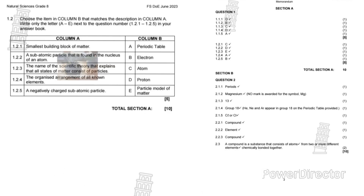Now I want you to check 1.2, which is the matching column. Try by yourself to answer these questions before you check the memorandum. Be truthful to yourself. After you try to check the answers by yourself, go to the memorandum which is before you and see how much you've got. These things don't change — most of the questions are repeating yearly. Just try to study these and you'll make it. I'm positive that you'll find most of these questions repeating, either in 1.1 or here in the matching column.